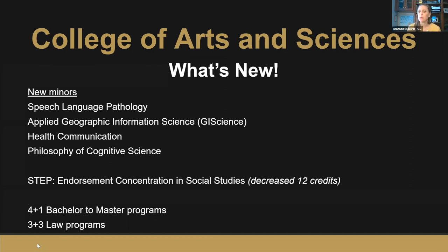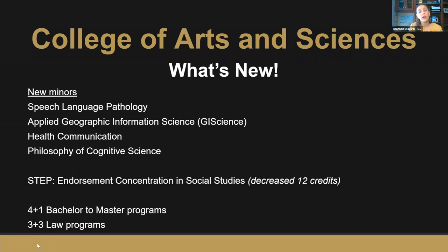As a reminder, we have several programs offering a four-plus-one for students interested in a master's degree, including psychology, English, and communications. We also have many majors where students can do the three-plus-three — three years at OU and then three years of law school to get their bachelor's plus law degree. All of this is listed on our website, helping students plan their long-term goals from the very beginning using the four-year plans.